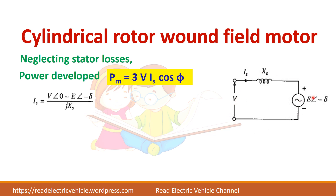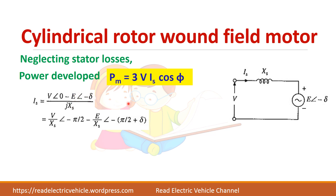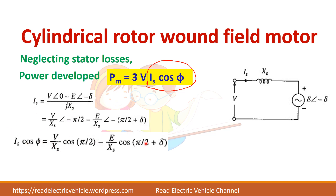We find Is from the equivalent circuit: Is = (V − E) / jXs. The angle for V is 0 degrees and for E it is −delta. Writing Xs as j×Xs (angle −90 degrees), we simplify to get Is = V/Xs ∠−90° − E/Xs ∠(−90° + delta). Multiplying by cos phi and simplifying, cos 90° = 0, so Is × cos phi = (E / Xs) × sin delta.